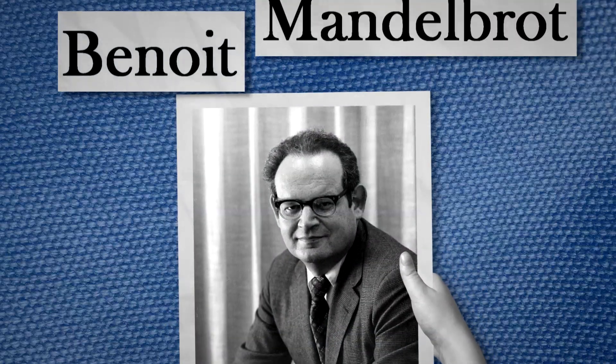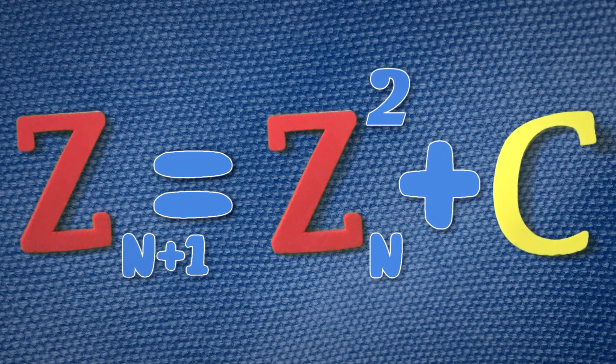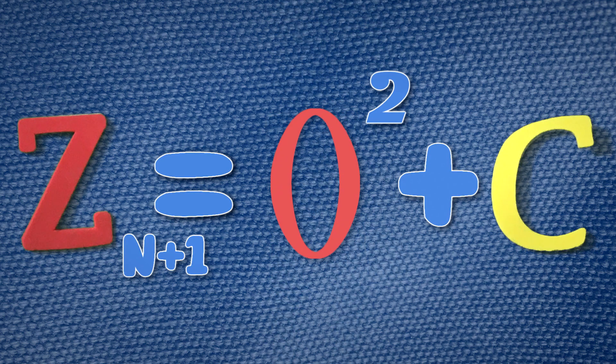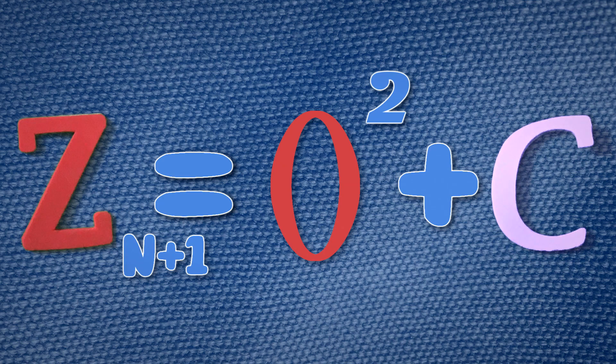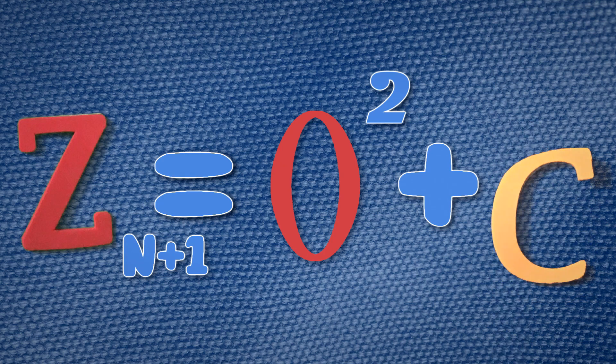Enter mathematician Benoit Mandelbrot. He decided to take this formula and always use 0 as his initial z value, while trying out different c values to check whether their iteration proved to be restricted or unrestricted.